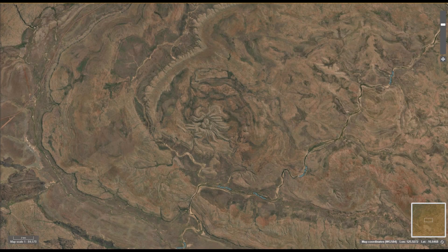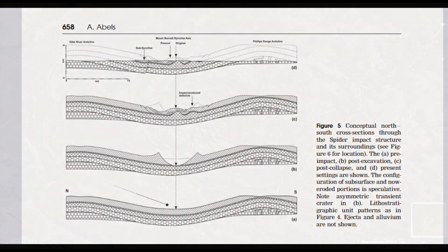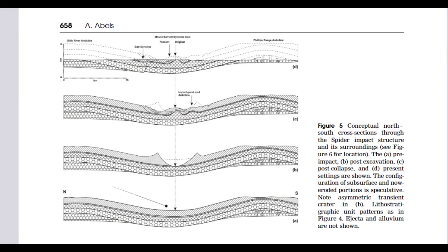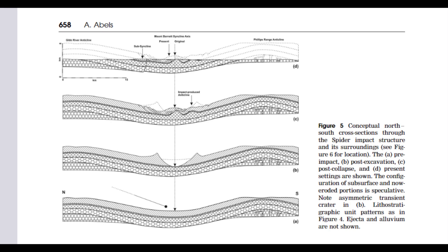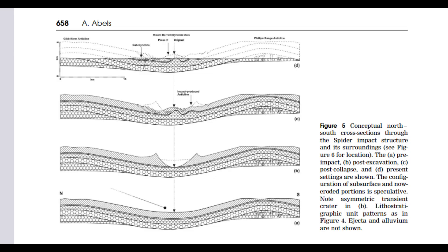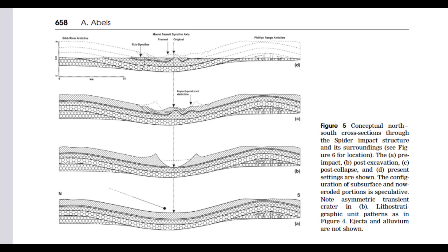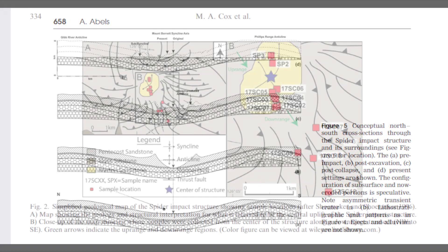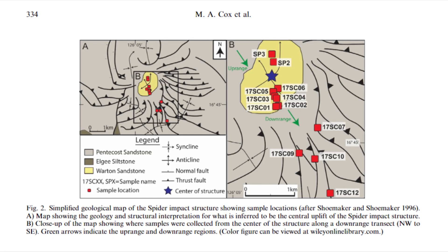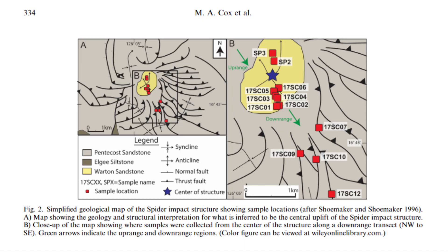The unique radial pattern of faults observed in the Spider Structure is thought to be the result of both the oblique nature of the impact and the pre-existing geological conditions at the site. The structure lies across the axis of the Mount Barnard syncline, a broad east-to-west orientated fold in the earth's crust. The presence of this syncline likely influenced the formation and orientation of the faults during the impact event, contributing to the asymmetrical deformation observed today. To clarify, a syncline is a type of fold in rock layers where the strata dip inward towards a central axis, forming a trough-like structure.